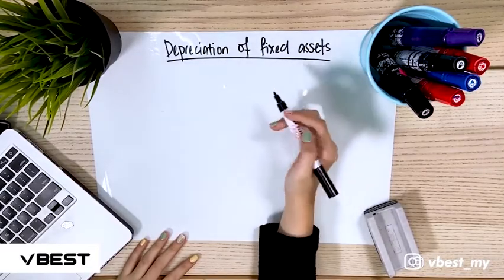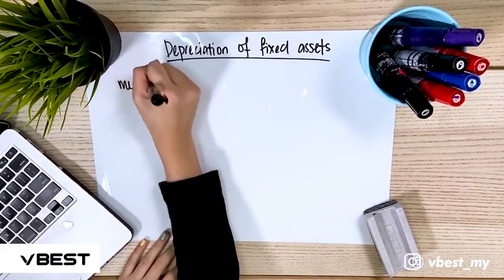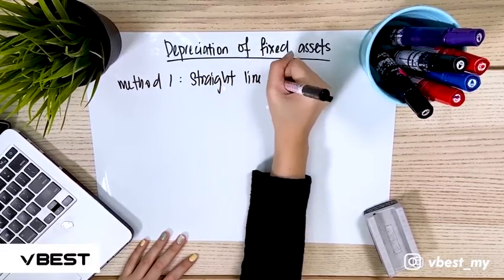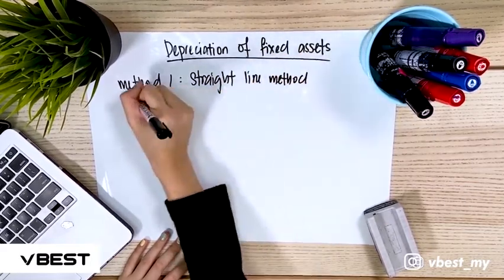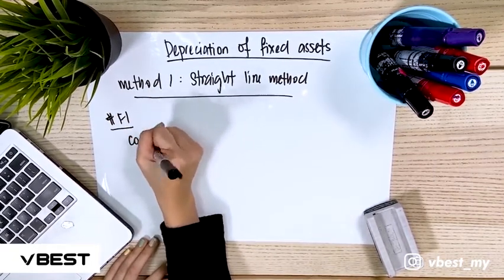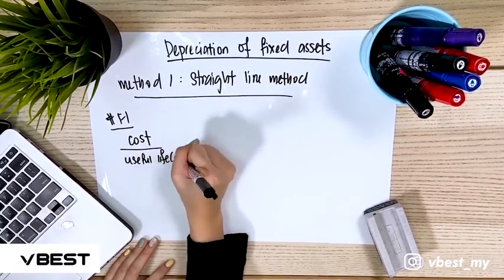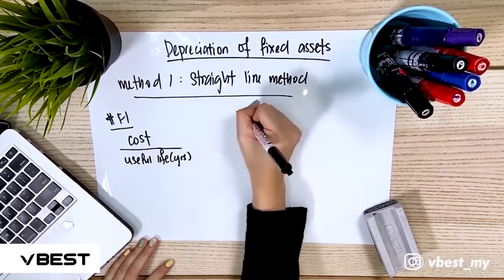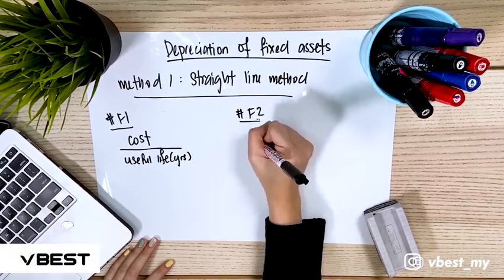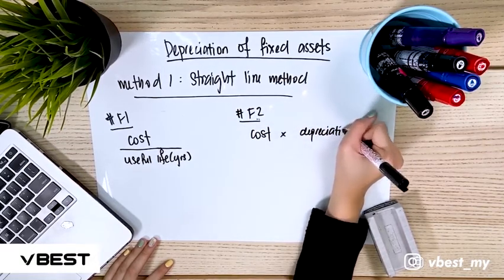Today we are going to discuss depreciation of fixed assets using the straight-line method. In this method we have two types of formula. The first formula uses the cost of the fixed asset divided by the useful life in years. The second formula uses the cost multiplied by the depreciation rate.